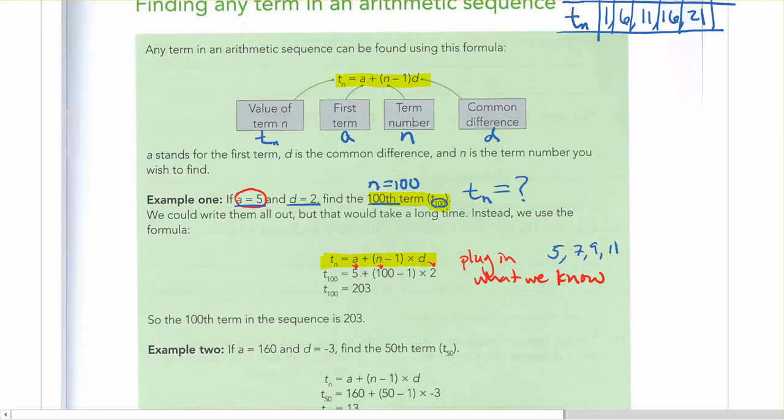So if you plug that into your calculator, 5 plus bracket, 100 minus 1 bracket times 2, you'll get 203. So the value of the hundredth term is 203.